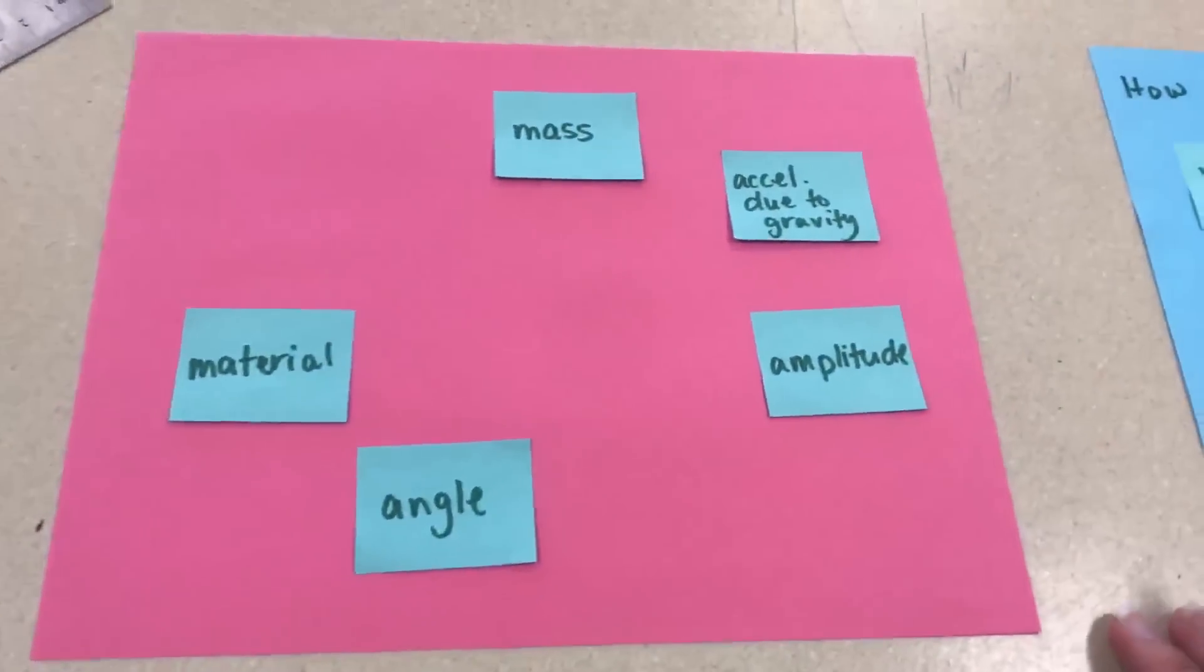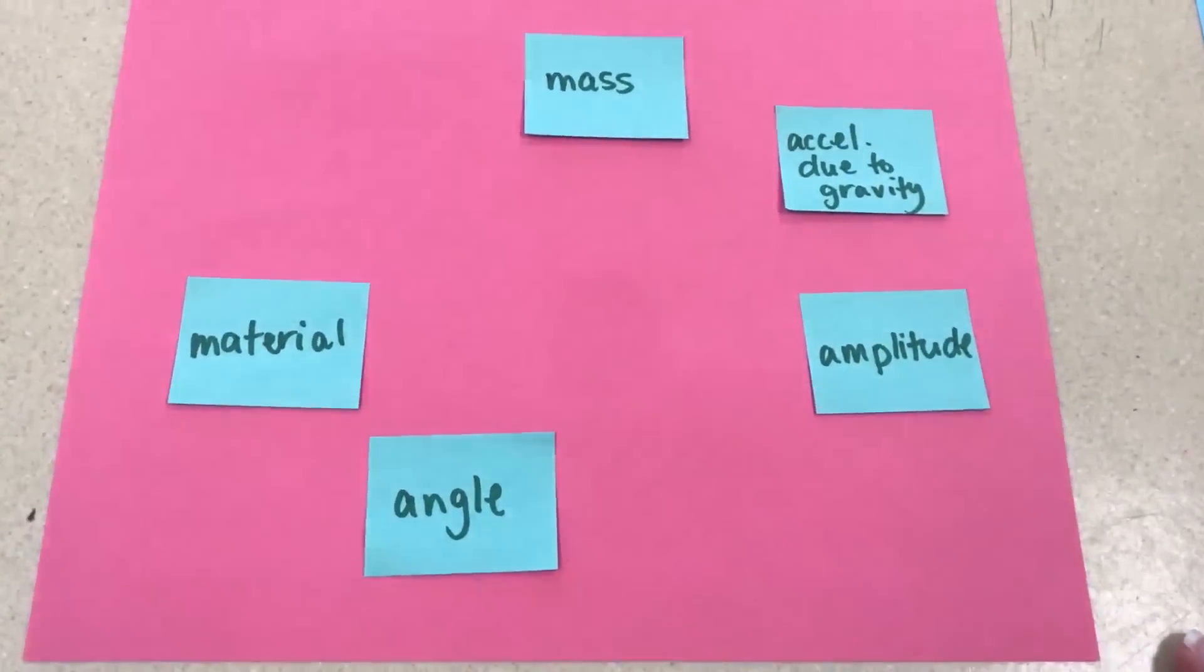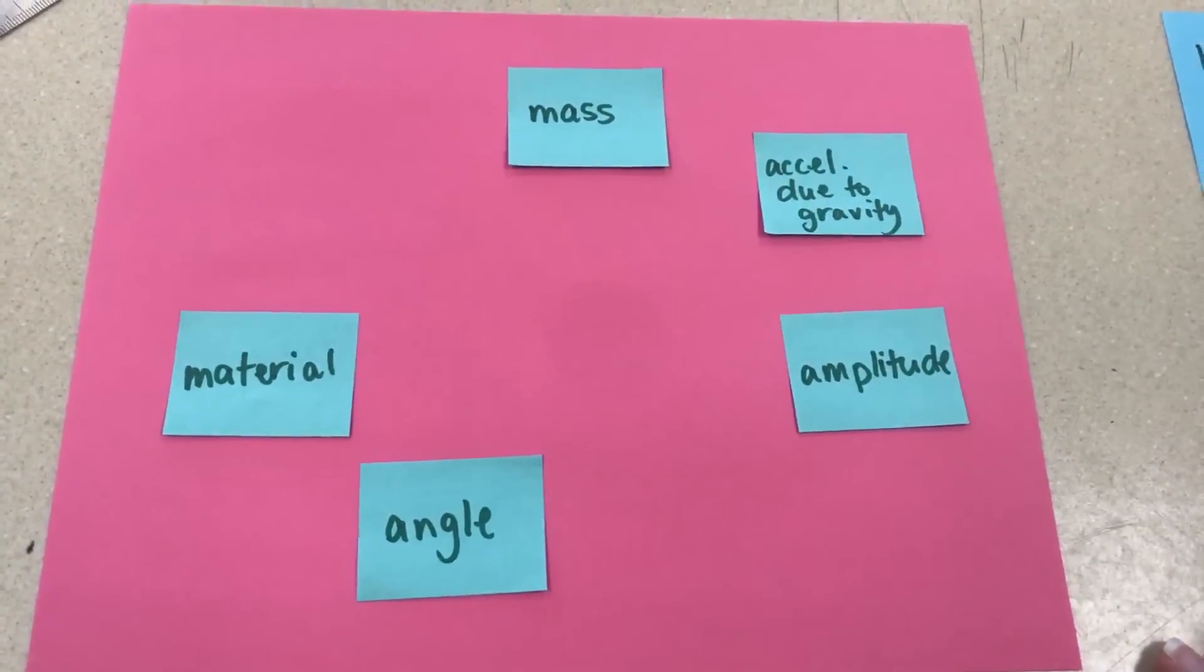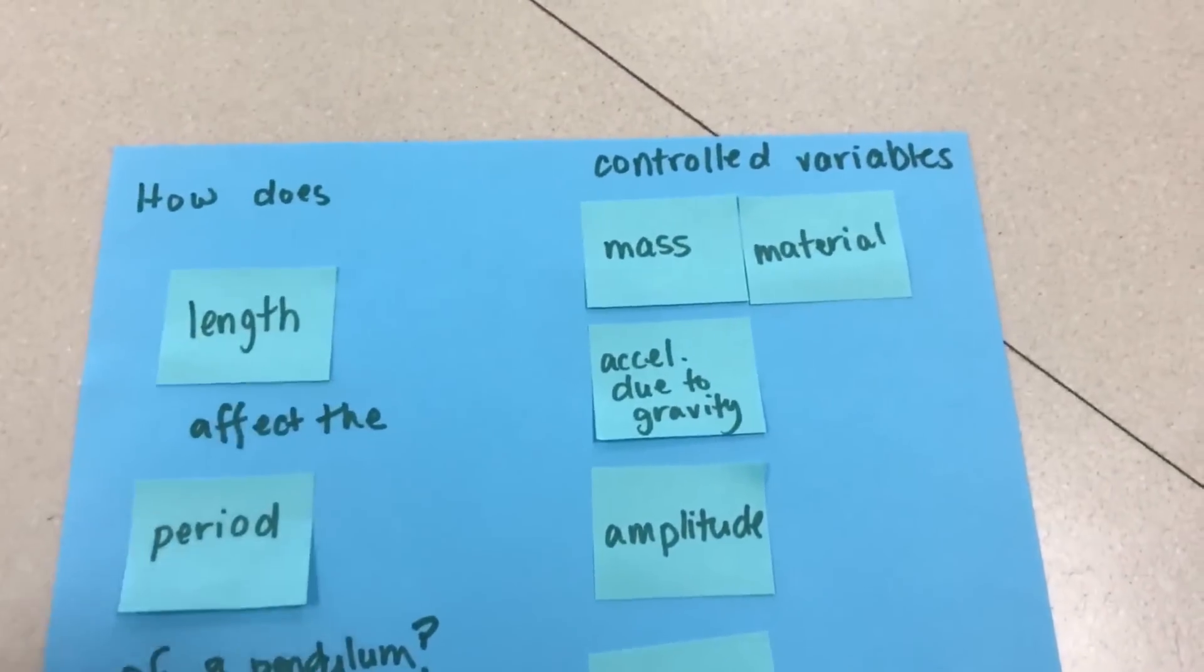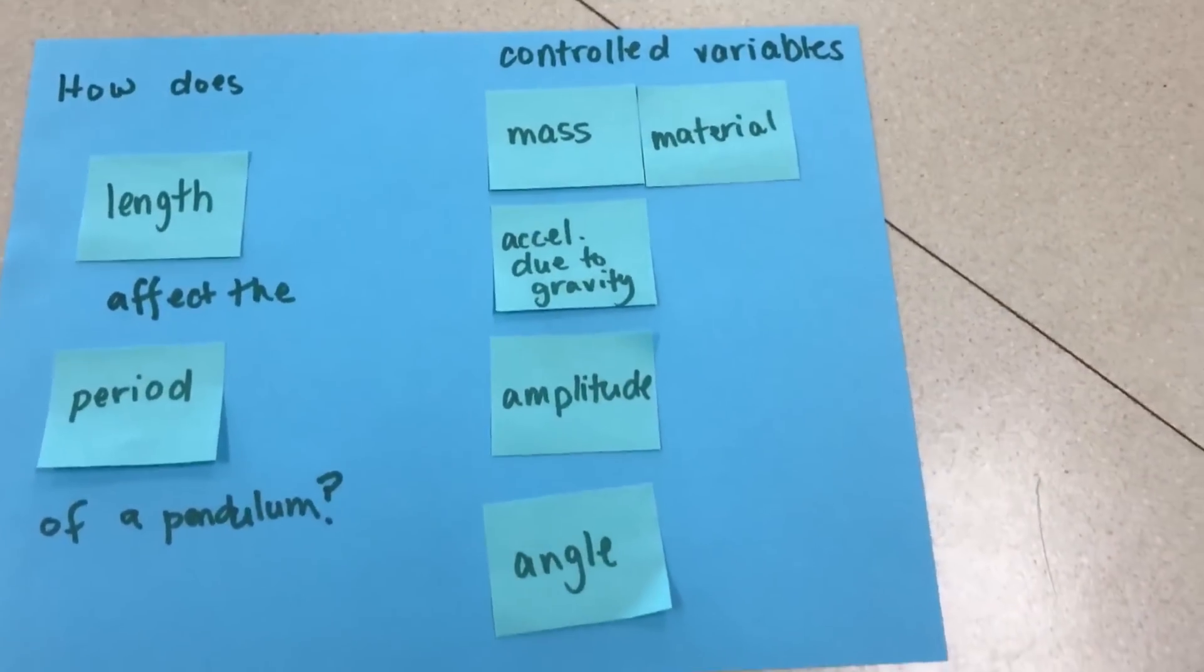Now these remaining variables need to be kept controlled during the experiment. So I'll move them all over. Now I've got my question and I have a list of controlled variables.